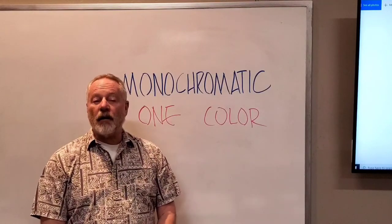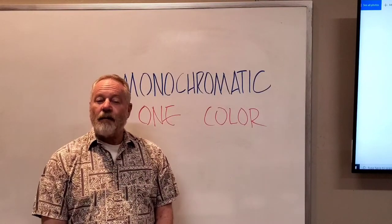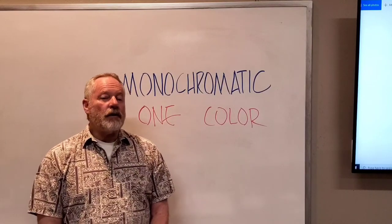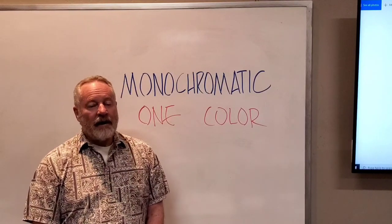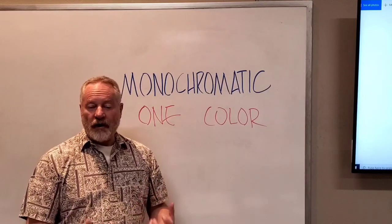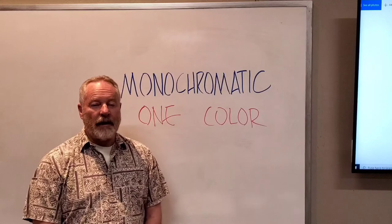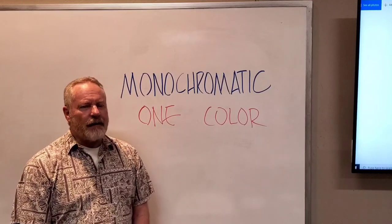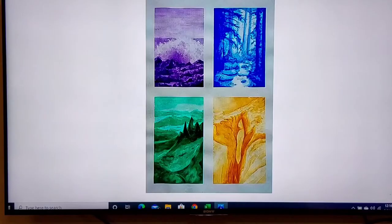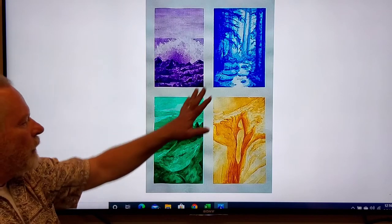Monochromatic simply means using one color, but that's not unusual. How many of you look at a black-and-white photo? Everyone has one — a black-and-white photo is monochromatic. If you were to depict that as a painting, you simply take black and, using water to thin it out, you paint it that way.